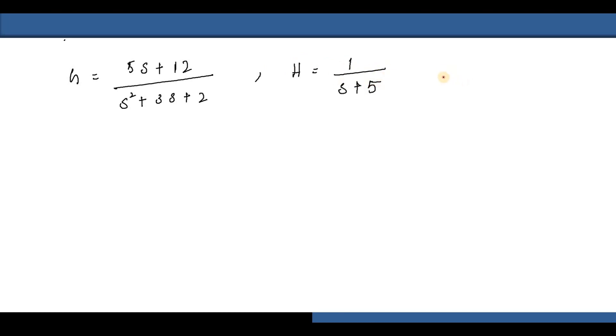The general formula for obtaining the transfer function of a closed loop system is G/(1+GH). Let's substitute G and H to obtain the transfer function. So (5s+12)/(s²+3s+2) all divided by 1 + (5s+12)/(s²+3s+2) times 1/(s+5). When you solve this one, you will get...